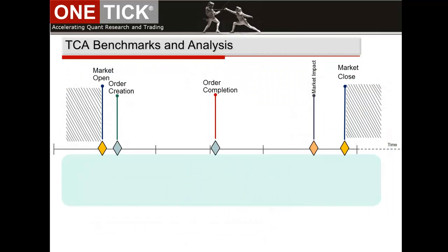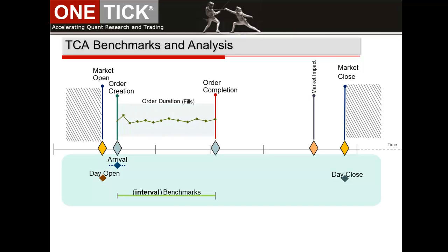Many benchmarks exist in TCA to measure trading performance. Some benchmarks are point in time, such as market open and close and arrival price. Others are more dynamic, consisting of average values for an order's duration, the trading day, or the period used to measure market impact. Those metrics include volume-weighted average price, simple moving average, traded volume, and volatility. Measured on both market prices and fills, they offer a good reflection of price activity from start to end.